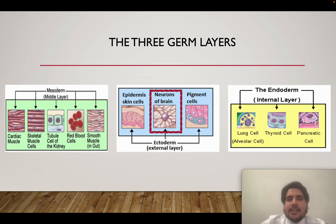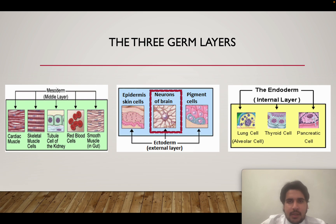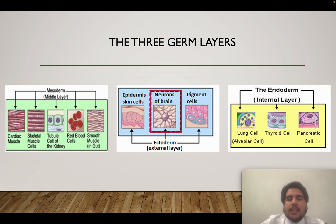Let's get started with the three main germ layers. We have the middle layer, the mesoderm; the endoderm, which is the inside layer; and the outer layer, which is the ectoderm. While all of these are very important for fetal development, for the purposes of this video we will focus specifically on the ectoderm — and specifically neurons and the central nervous system.